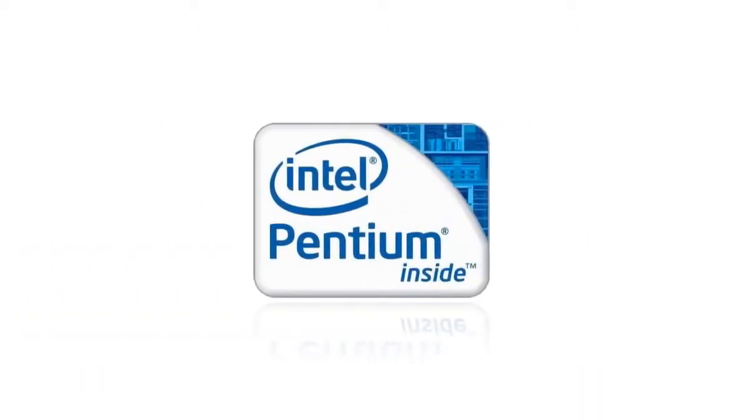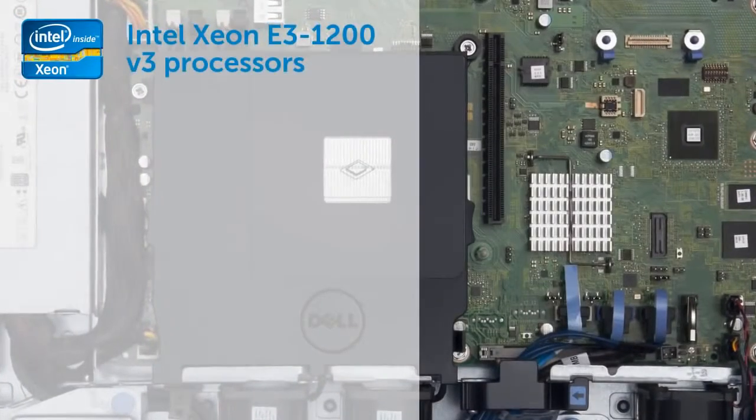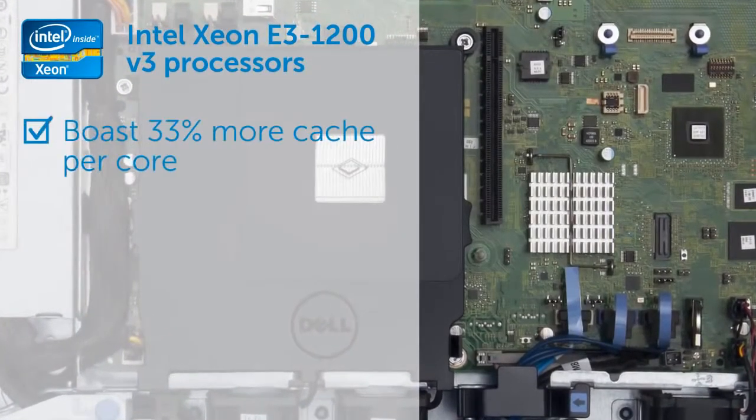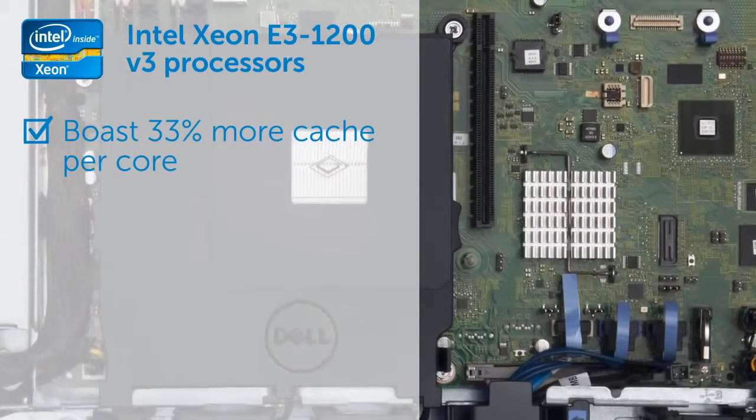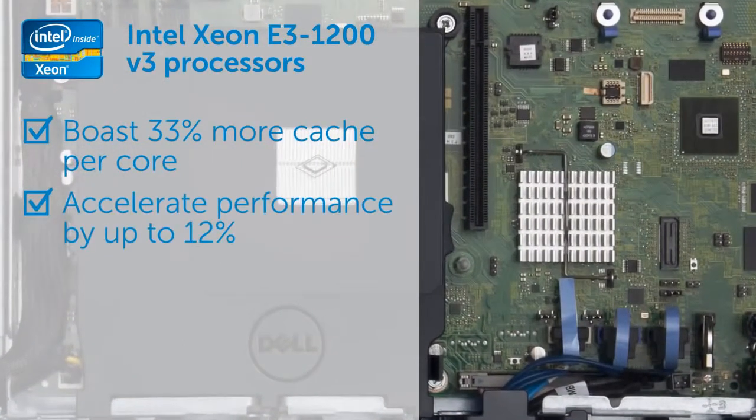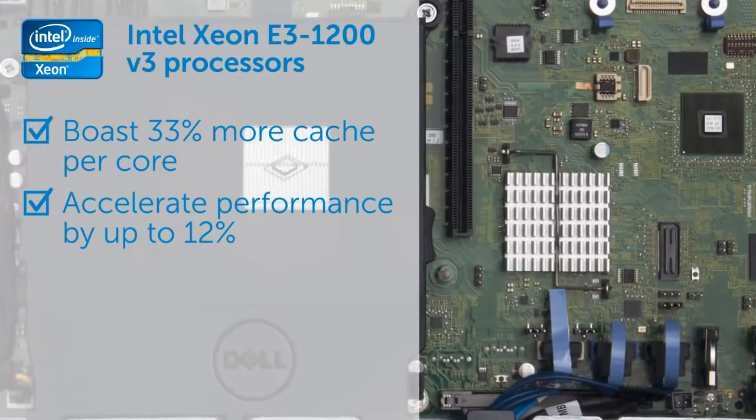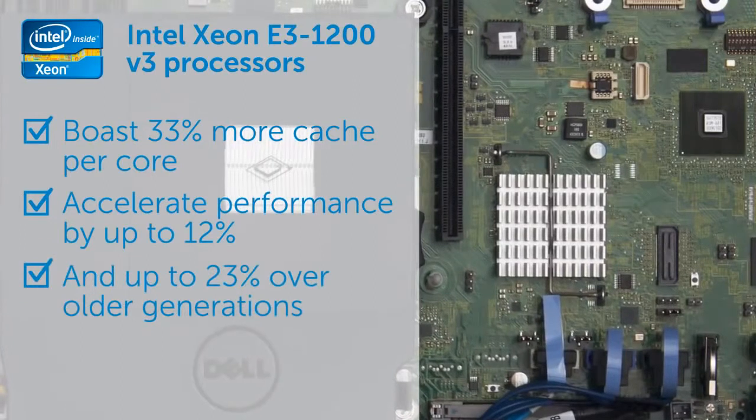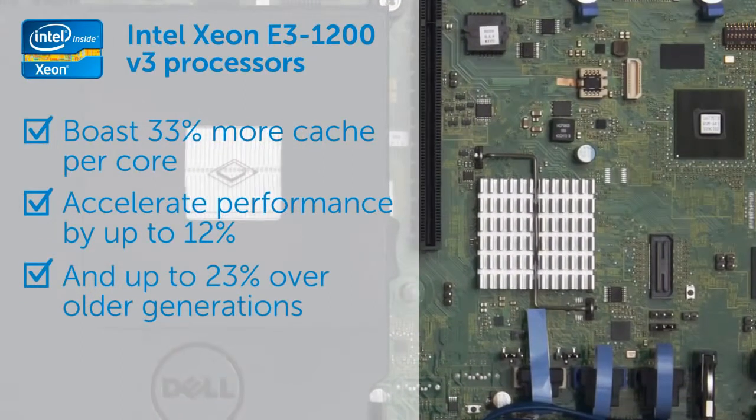Users can choose from the Intel Celeron, Pentium, and Xeon E3-1200v3 families. The Xeon E3-1200v3 processors boast 33% more cache per core than the previous generation V2 processors, accelerating performance by up to 12% over previous generation Intel Xeon processor-based servers, and by up to 23% compared to a two generations older Intel Xeon processor-based server.